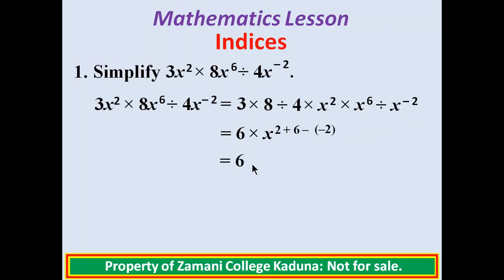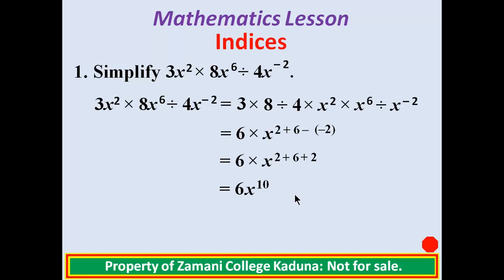We still have our 6. This is x raised to power 2 plus 6. Since subtracting negative 2 gives plus 2, we have 6x raised to power 2 plus 6 plus 2. That gives 8 plus 2, which equals 10. So we have 6x raised to power 10. This problem has been simplified; the answer is 6x raised to power 10.